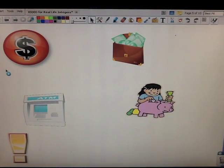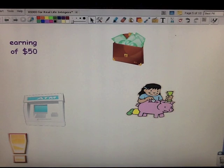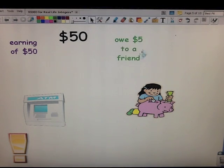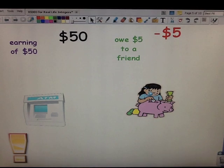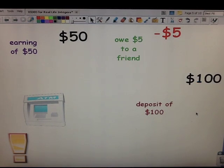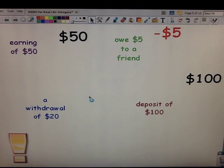We also use integers when talking about money. Earning $50. If you earn $50, then it's plus 50. You owe $5 to a friend. That means that's a negative 5. If you deposit $100 into the bank or into your piggy bank, then that's a positive 100. And if you go to the ATM and take a withdrawal of $20, then it's negative 20.